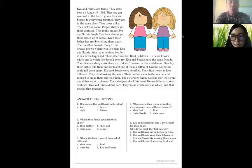All right. Thank you very much. So Mr. will repeat that Eva and Susie are twins. They were born on August 5th, 1992. They attend now in the fourth grade. Eva and Susie do everything together. They are in the same class. They dress alike. Here, at the first paragraph, what do you think? What can you find in the first paragraph?